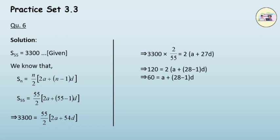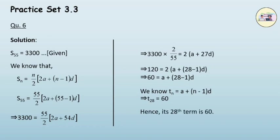As we know t(n) = a + (n−1)d, and the equation simplifies to a + 27d = 60, therefore t(28) = 60. Hence, the 28th term is 60.